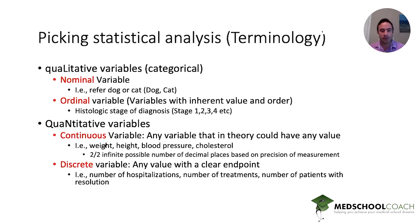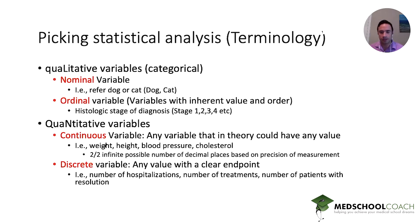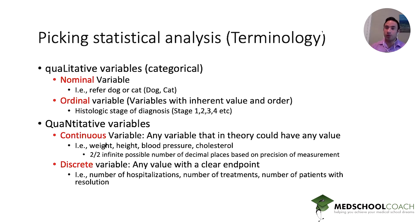The other subset is quantitative variables, which include continuous and discrete. Continuous variables can take any value — such as height, weight, blood pressure, cholesterol — and have an infinite number of decimal places based on precision of measurement. A discrete variable has a clear endpoint, such as number of hospitalizations, number of treatments, or number of patients with resolution. Examples include number of physical therapy treatments to get well or number of antibiotic doses until a patient has negative blood cultures — ideally whole numbers like 10 or 20 treatments.